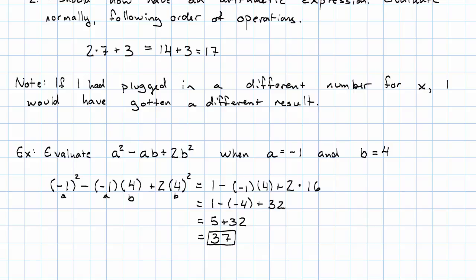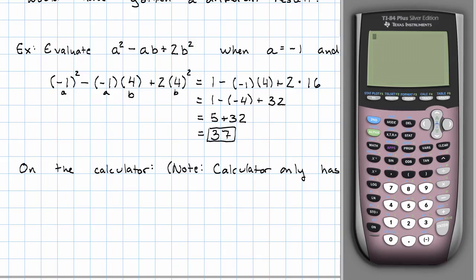Notice we can also do this on the calculator. The calculator knows about letters. So here we're going to be using the letters of the alphabet. To enter the letters of the alphabet, we'll use this alpha button, the green button. And we can see the letters of the alphabet in little green type up above the keys.